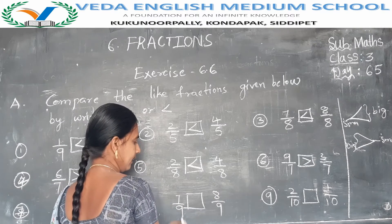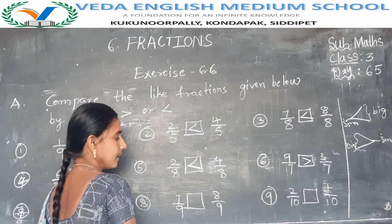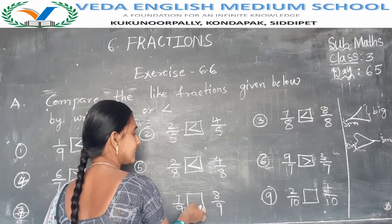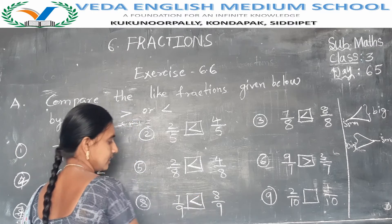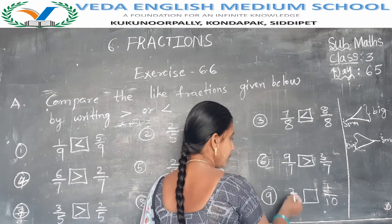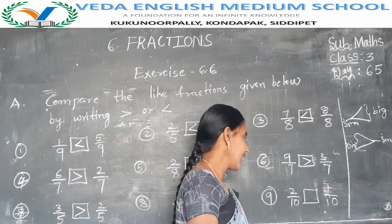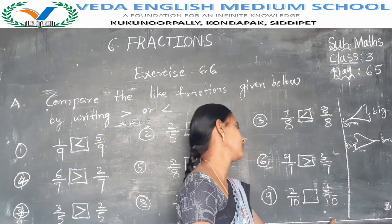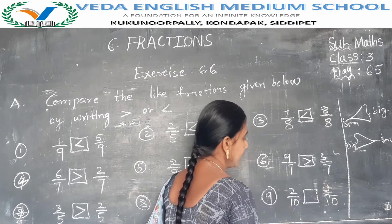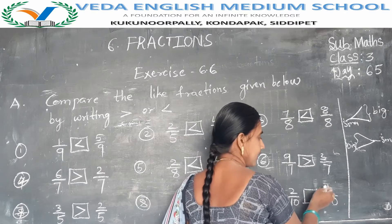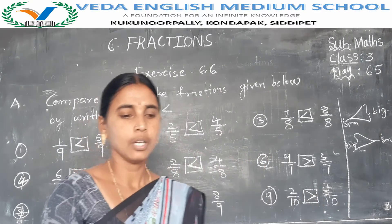Next: 7 by 9 and 8 by 9. Numerators are 7 and 8. Which one is the greater? 7 is less than 8. So I use less than. Last one: 2 by 10 and 1 by 10. Which one is the bigger fraction — 2 by 10 or 1 by 10? Denominators are the same, but numerator changes. 2 is greater than 1. So I use the greater than symbol in the box.